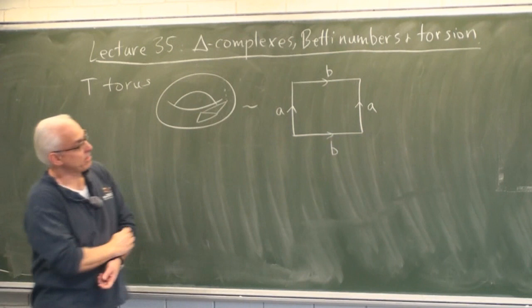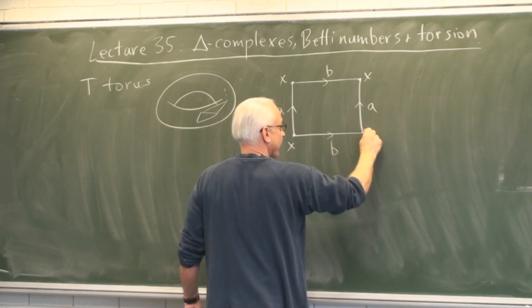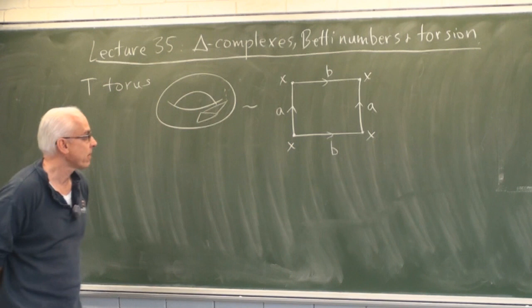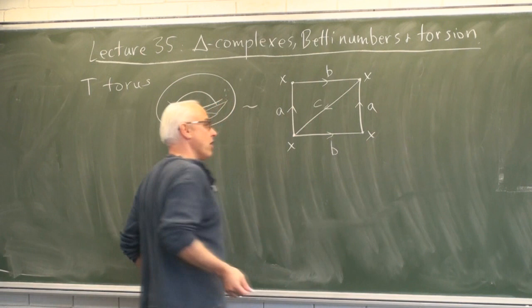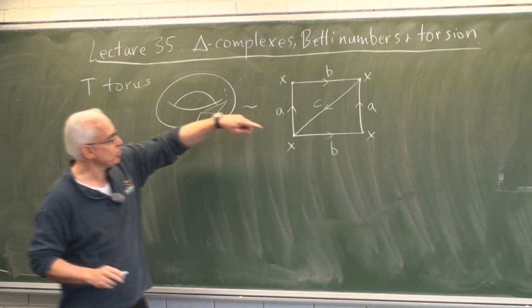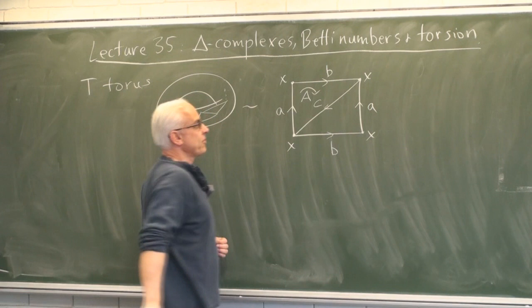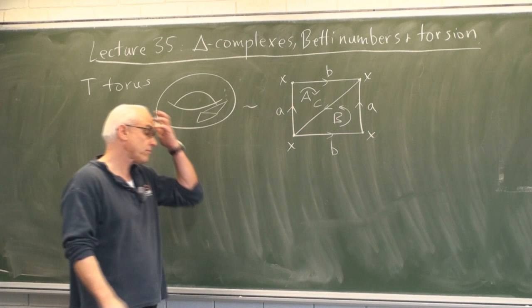When we make this identification, the corners are all actually the same point. Call it X — all four corners of the square come together at point X. To make a triangular subdivision, we'll do the simplest possible thing: introduce a diagonal with an arbitrary orientation and call it C. Now we have two triangular simplices of a special kind. The top one we'll call capital A with a given orientation, and the other capital B with its orientation.